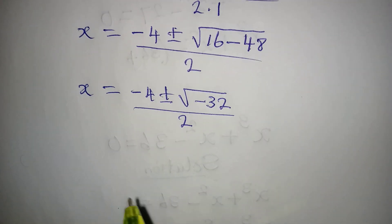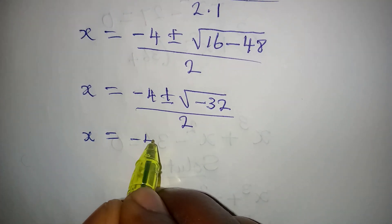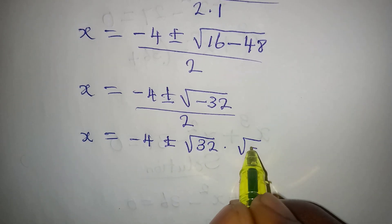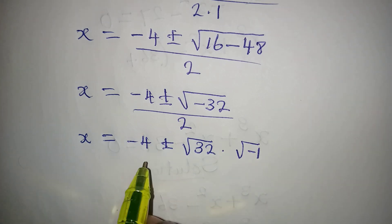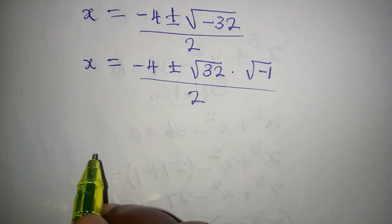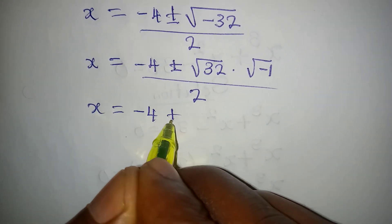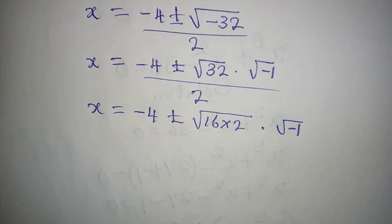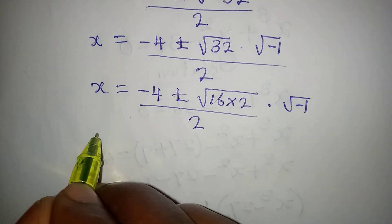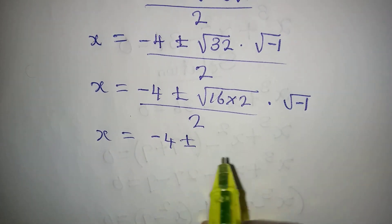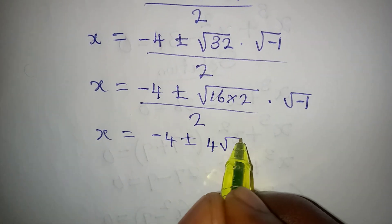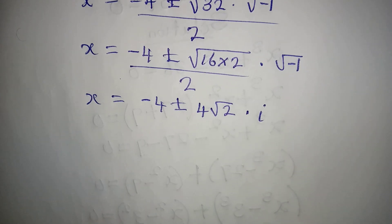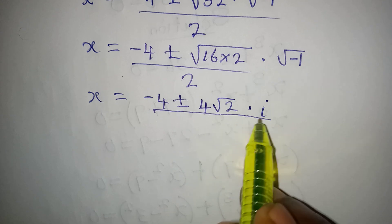We have x = (−4 ± √(−32)) / 2. Separating the negative: √(−32) = √(16 × 2) × √(−1) = 4√2 × i. So x = (−4 ± 4i√2) / 2, which simplifies to x = −2 ± 2i√2.